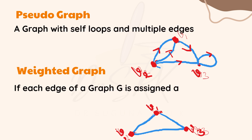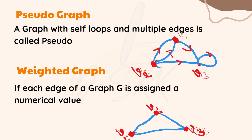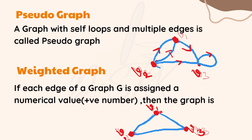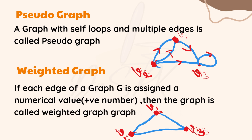What is a pseudograph? A graph with self-loops and multiple edges is called a pseudograph. Looking at the first diagram, between V1 and V2 there are multiple edges, and at V3 there is a loop. That is why this graph is a pseudograph.